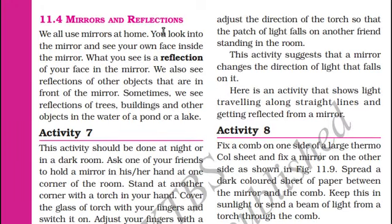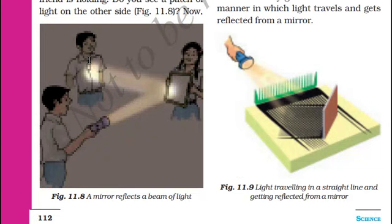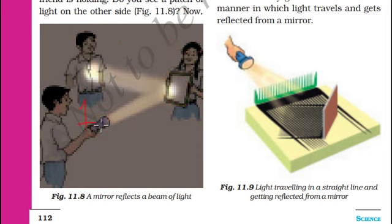Mirrors and reflection. We all use mirrors at home. You look into the mirror and you see your own face — what you are seeing is your own reflection. There are three friends: friend one is holding a torch, friend two is holding a mirror, and friend three is standing at some angle. When friend one turns on the torch and casts light on the mirror, the light will be reflected. Friend two holds the mirror at such an angle that the reflection is cast on friend three.